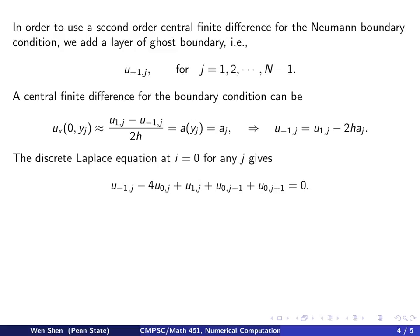So you can also assume that the Laplace equation holds at i equals to 0, while x equals to 0, and you write out the discrete Laplace equation for i equals to 0. So this gives us u_{-1,j} minus 4u_{0,j} plus u_{1,j} plus u_{0,j-1} and plus u_{0,j+1} equal to 0.